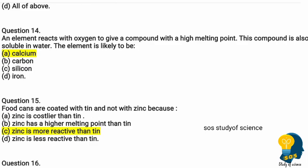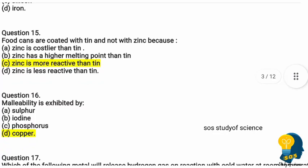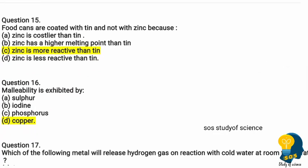Question fourteen: an element reacts with oxygen to give a compound with a high melting point, which is also soluble in water. The element is likely to be — option A calcium, option B carbon, option C silicon, option D iron. The correct answer is option A, calcium, because calcium reacts with oxygen to give calcium oxide, which has a high melting point and is soluble in water.